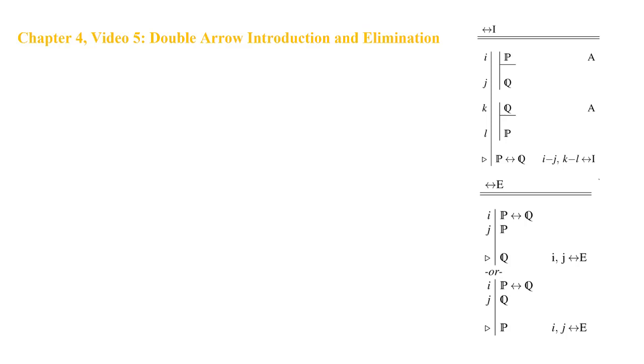Let's look first at double arrow elimination. This is pretty simple. Remember how arrow elimination worked? You had to have an arrow statement and the antecedent that then allowed you to get the consequent. Well, here we're dealing with a double arrow, so we don't speak in terms of the antecedent and the consequent. Rather, with a double arrow statement and the left-hand side, you can derive the right-hand side. But the good thing about the double arrow being double is that we can also move from right to left. So given an arrow statement and the right-hand side, we can deduce the left-hand side.